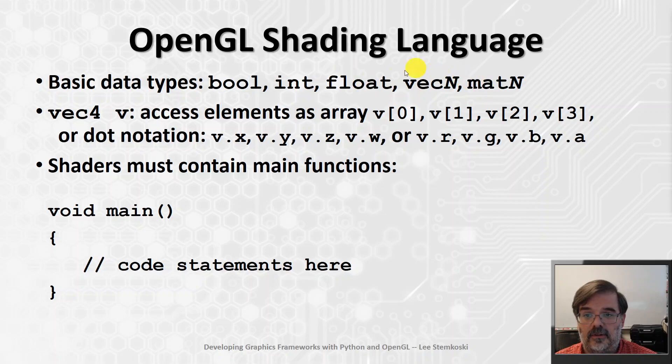So these vectors, for instance, vecN. Let's say if you had a vector with 4 components called v. To access the components of that vector, you could treat it like an array and retrieve them by index. So v[0], v[1], v[2], v[3]. Or alternatively, you can also use dot notation. And conveniently, there are multiple dot notations available. Depending on the context, your code might be clearer if you use one of these as opposed to the other. For example, you can access the 4 components of a vec4 using dot x, dot y, dot z, and dot w.